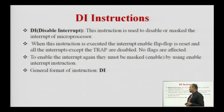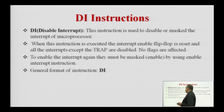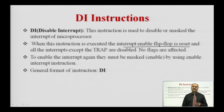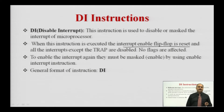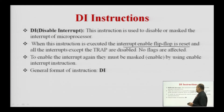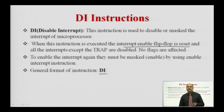Next instruction is DI — disable interrupt. This instruction is used to disable or mask the interrupt of the microprocessor. When this instruction is executed, the interrupt enable flip-flop is reset. All interrupts except TRAP are disabled and no flags are modified. Whenever the microprocessor executes the DI instruction, all interrupts are disabled except the TRAP interrupt, because TRAP is a non-maskable interrupt. To re-enable the maskable interrupts RST7.5, RST6.5, and RST5.5, we use the EI instruction again. The general format is: DI.